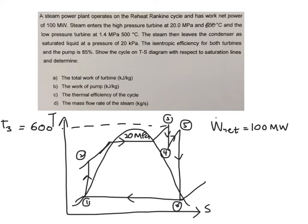The low pressure turbine is working at 1.4 megapascals and 500 degrees C. If we project this constant pressure line on the TS diagram, this will be your 1.4 megapascal line, and the temperature at state 5 is 500 degrees C.